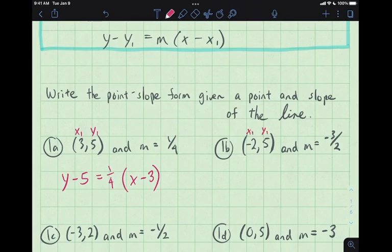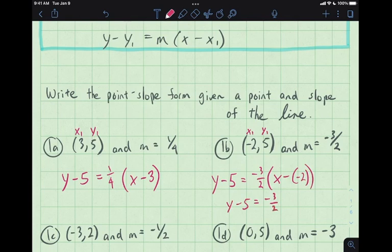Let's do a couple more examples. Label it here. y take away your same old 5 equals negative 3 halves, x, x take away negative 2, and this time around we can do a little bit more simplifying. We can rewrite the right hand side to look like this, x plus 2. Either of these two answers would be right here.